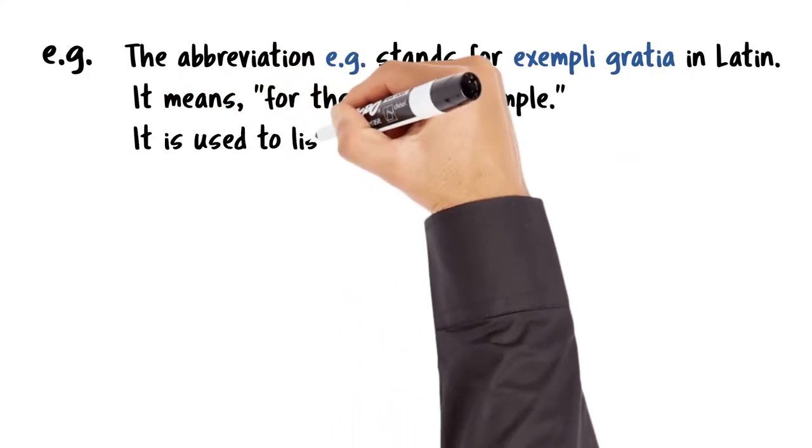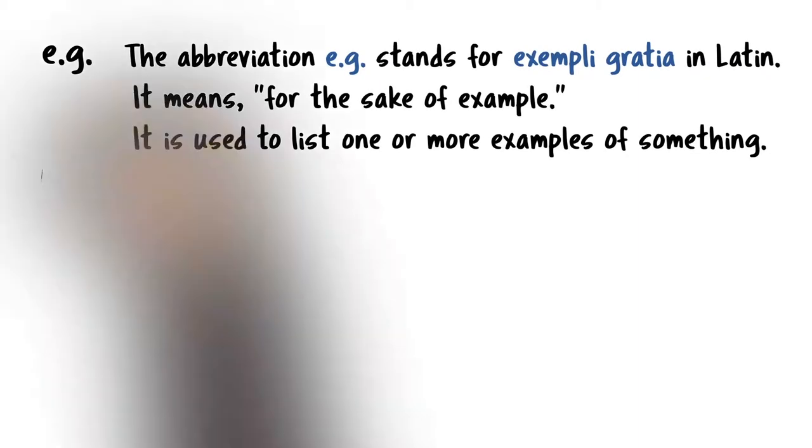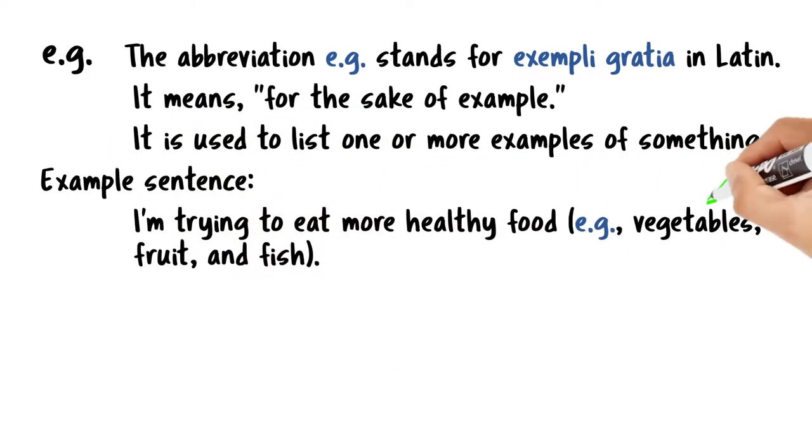This abbreviation is used before listing one or more examples of something to show what you mean. It's not a complete list, just more possibilities. In this sentence, you can see a few examples of healthy food. There are definitely more possibilities that you could list, but these are enough to give the reader a better idea.